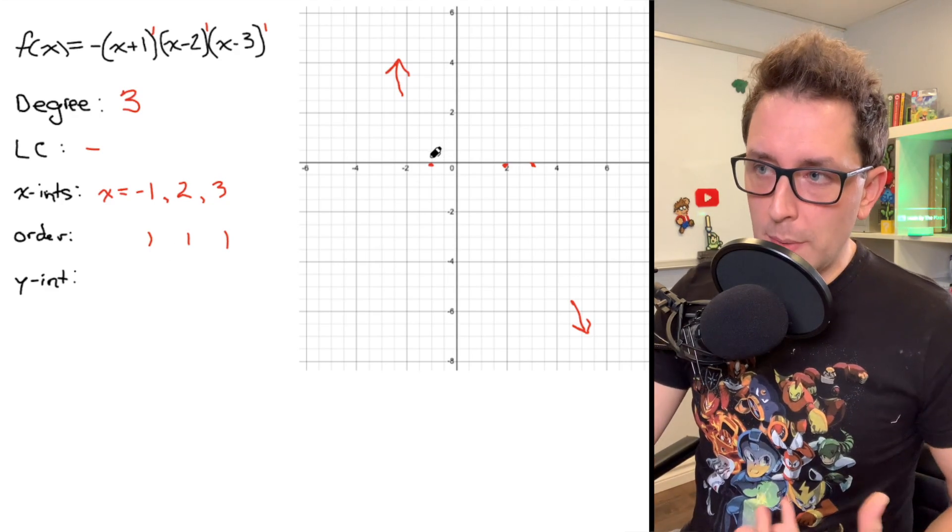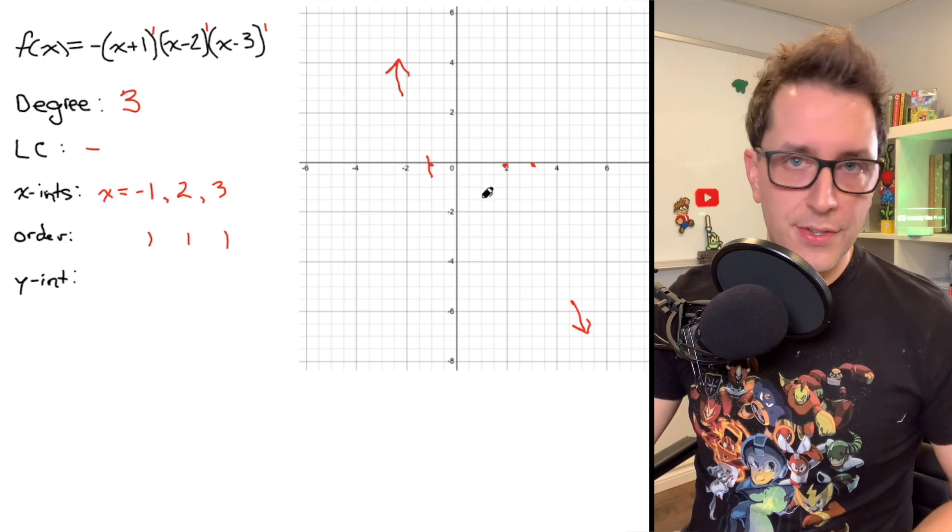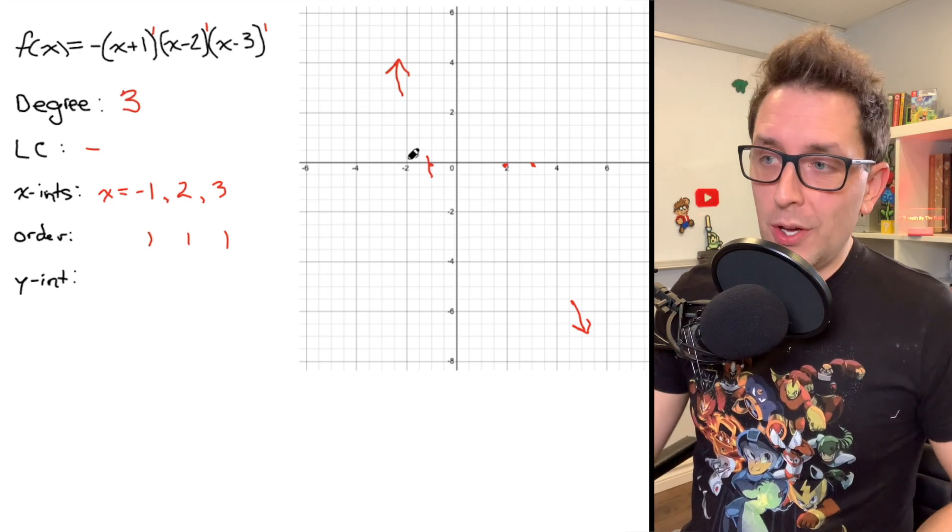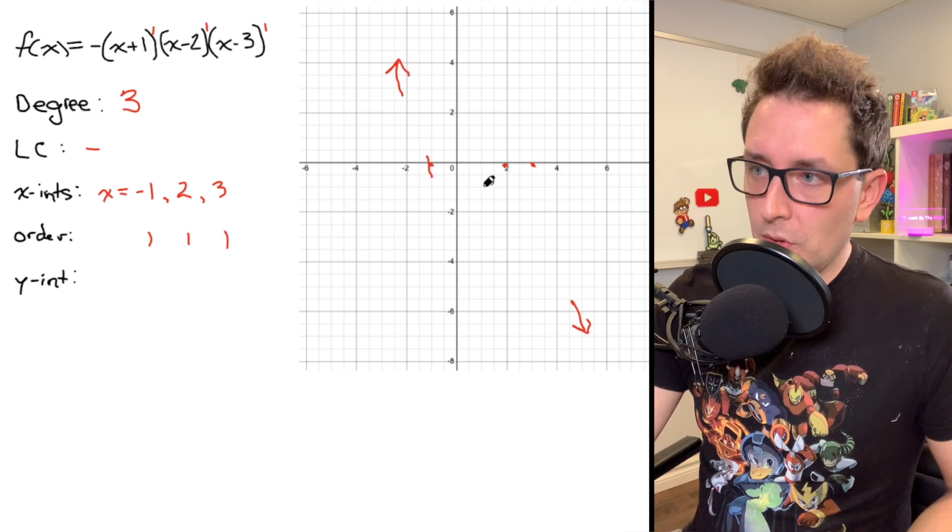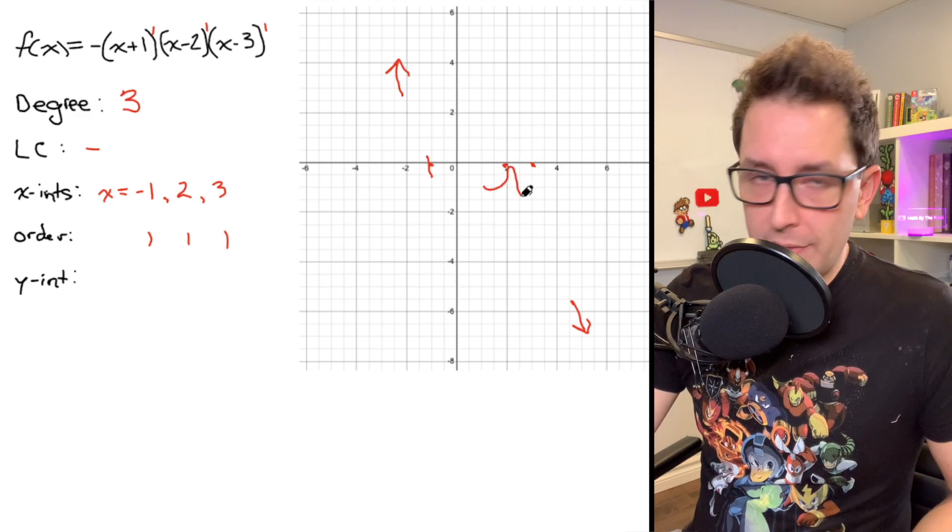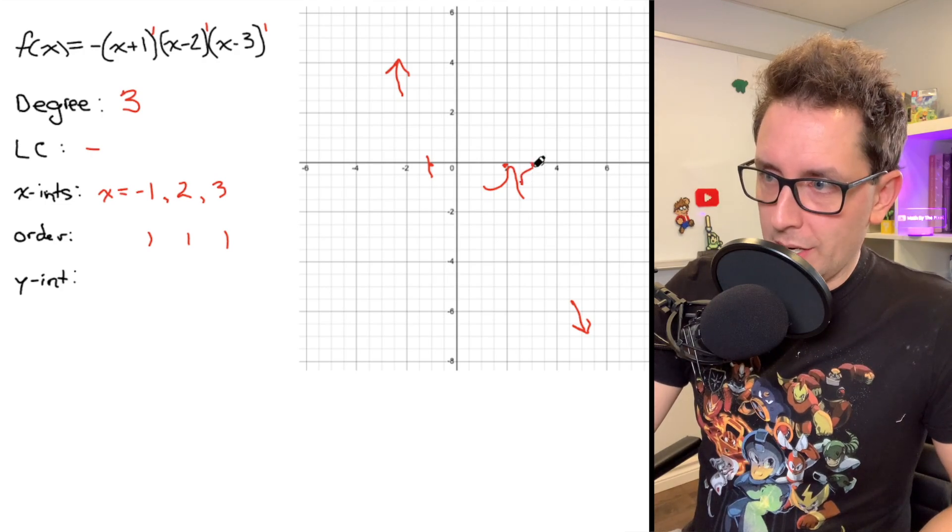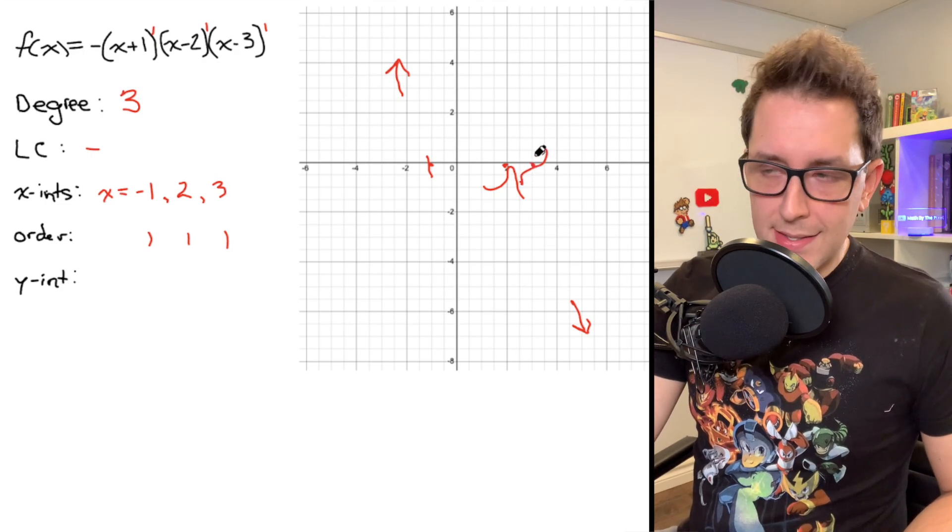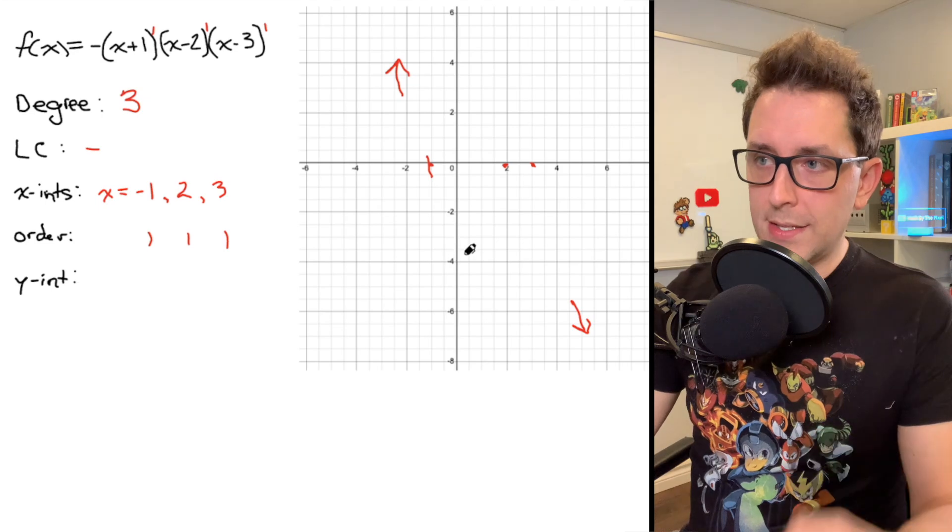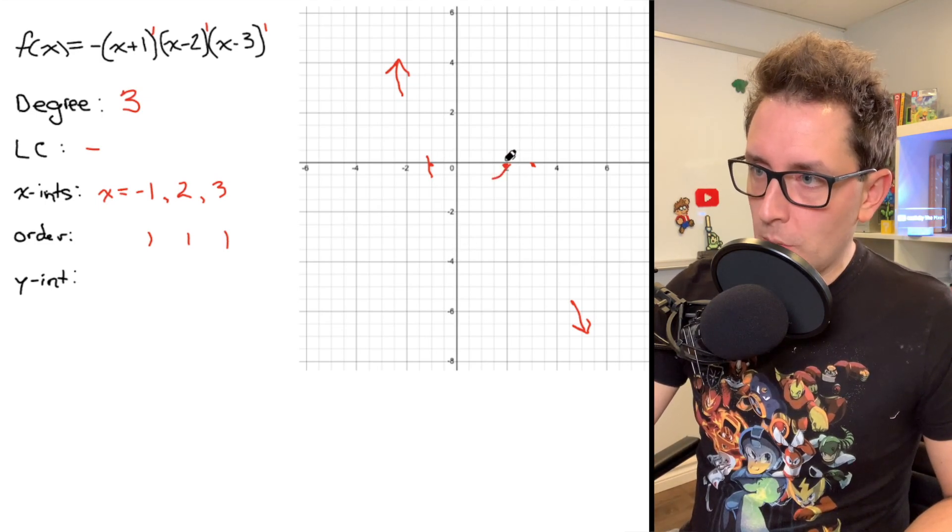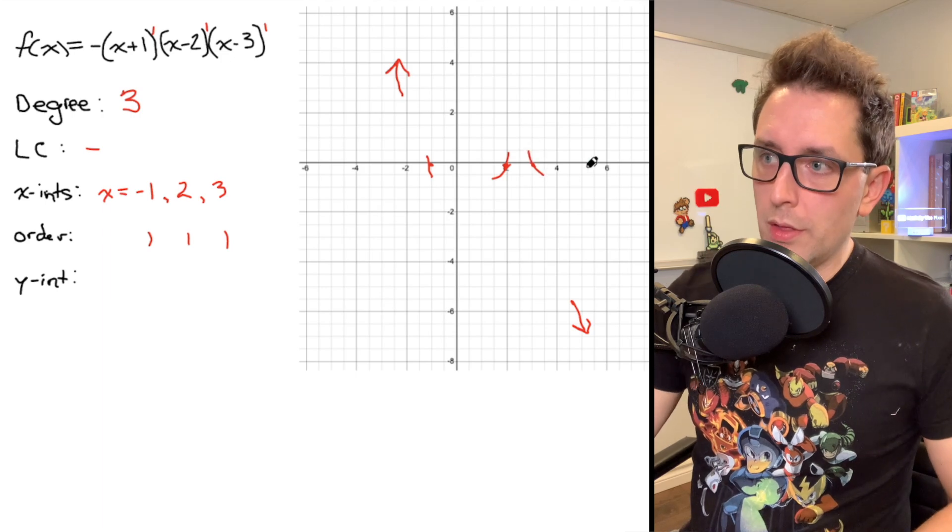On a graph, an order 1 x-intercept means we're just going to pass through our x-intercept. And you might be thinking, what else could possibly happen at an x-intercept? Well, an order 2 x-intercept would look something like this, where we sort of bounce off the x-axis. An order 3 x-intercept looks sort of like this, where it sort of sits on the x-axis. But we're working with an order 1 x-intercept in all cases here.